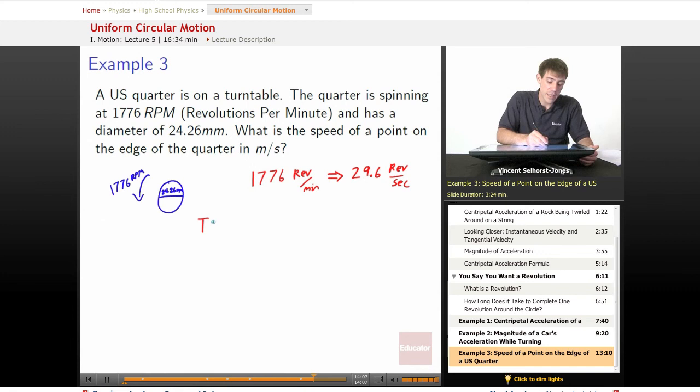But that's not equal to T. T is equal to that number flipped, because T equals 1 over 29.6, which is the number of seconds per revolution. How many seconds does it take to give you a revolution? It takes 1 over 29.6 seconds per revolution.